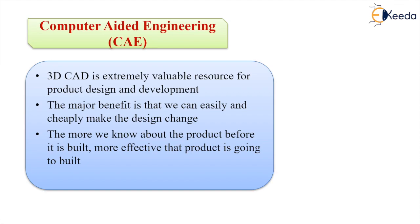If problems are identified after the physical makeup of a part, this can be very costly. Once we complete the design process, we define the manufacturing processes, set of operations, sequences, make the fixtures and holding devices, and start production. If after all setups are done and production has started we identify some problem, then rectifying it at that stage is a very costly thing.